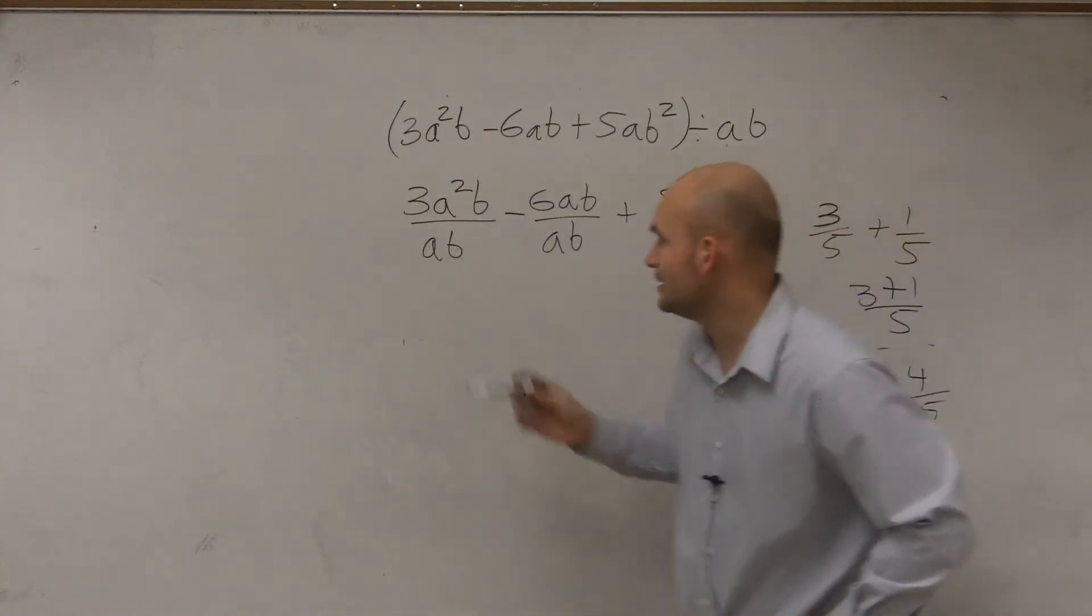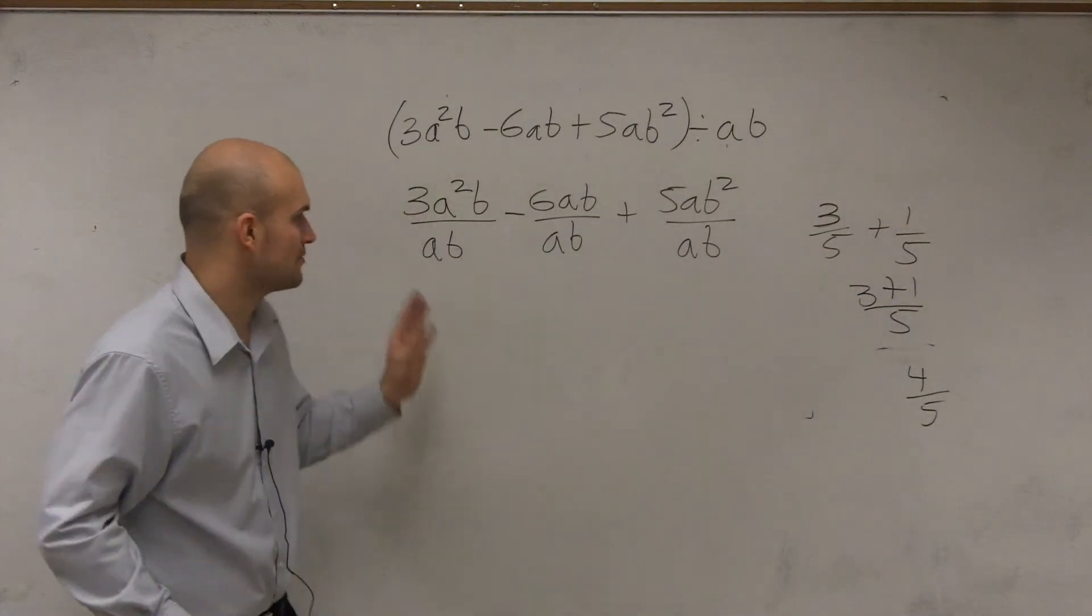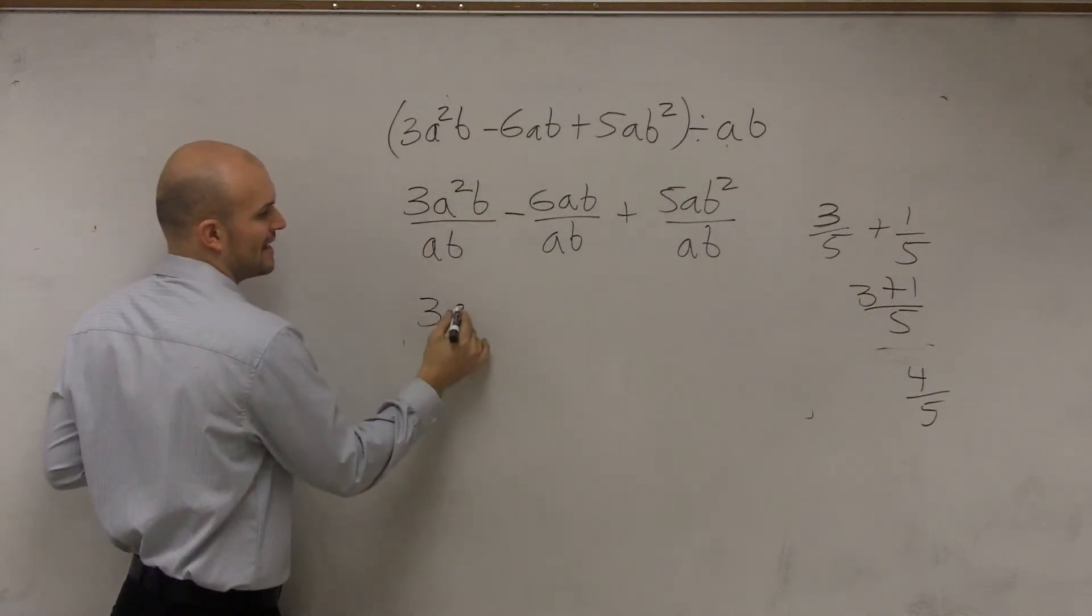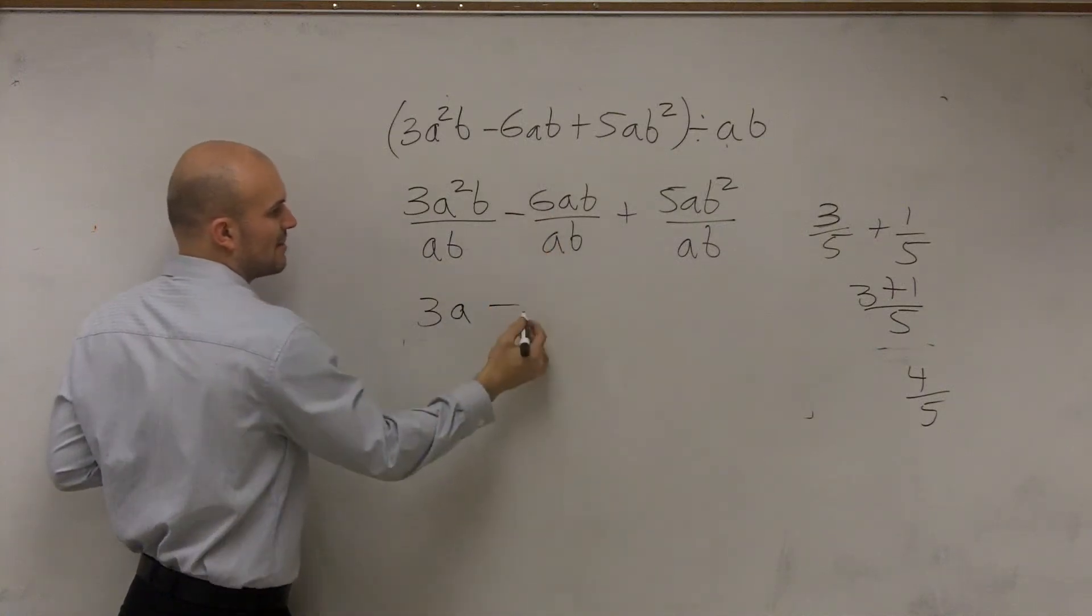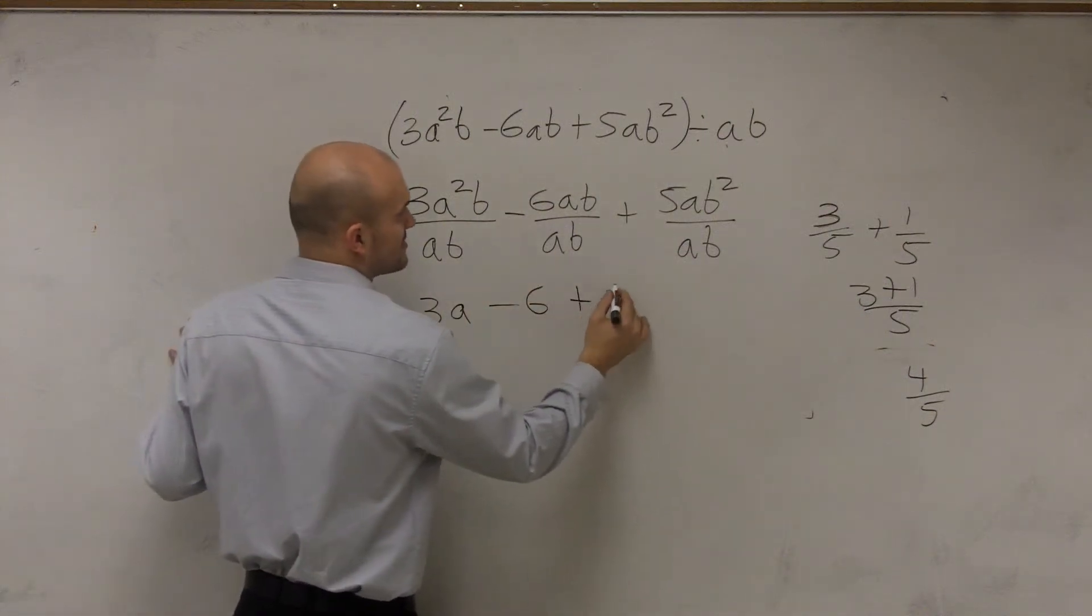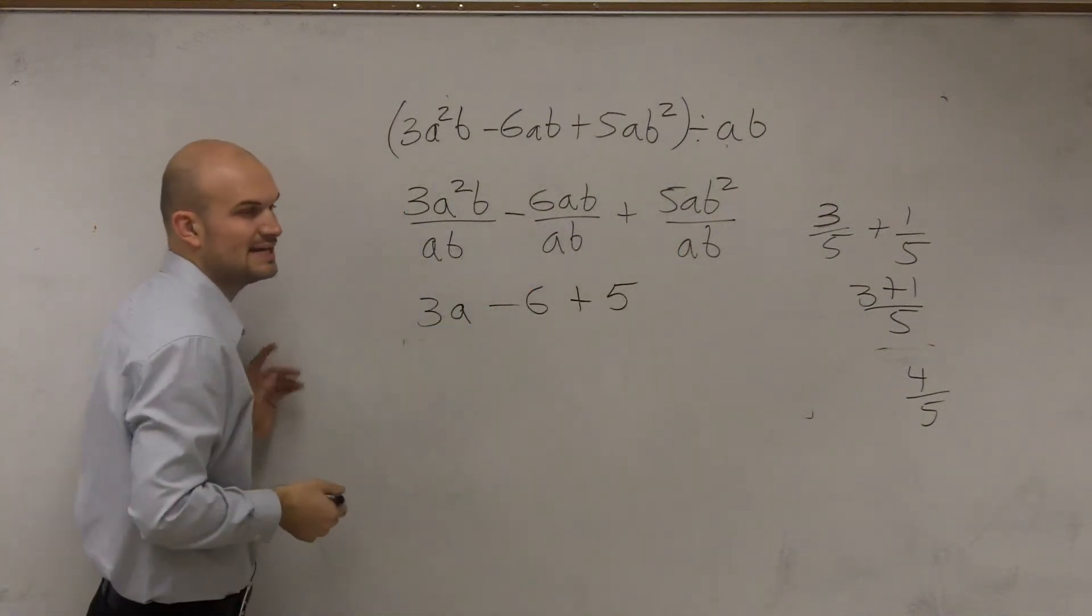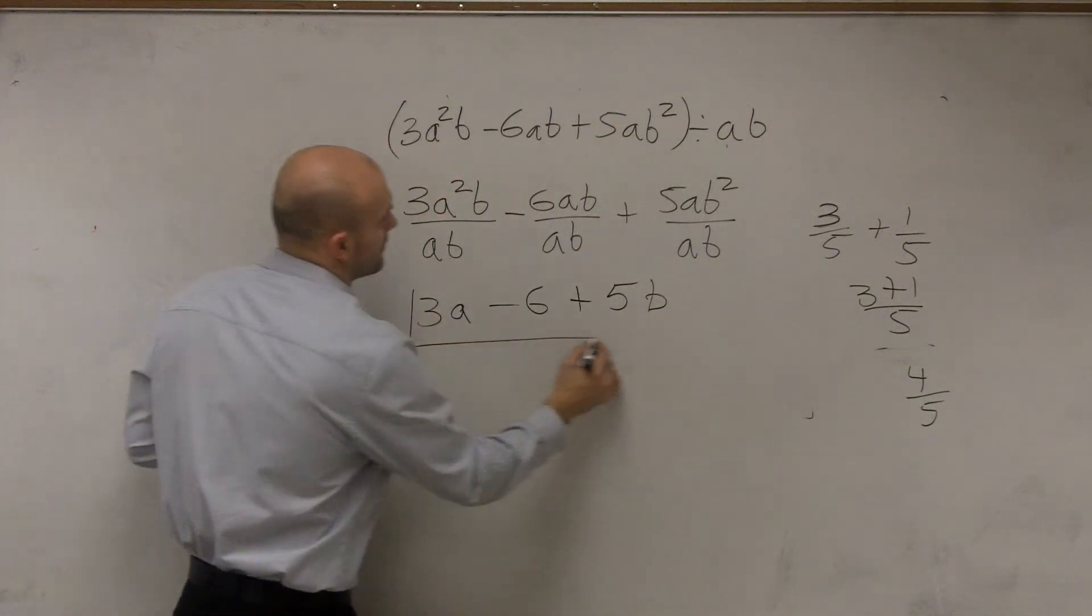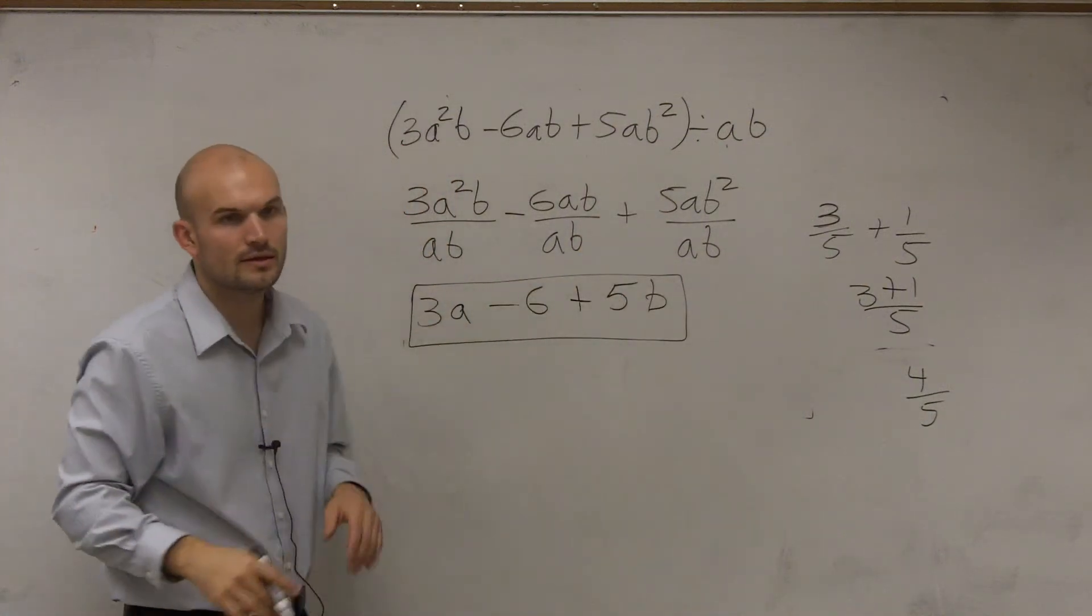3a squared divided by A. Well, that's a 3 divided by 1, so we're going to be left with 3. a squared divided by A is A. B divided by B is just 1, minus 6 divided by 1 is 6. A divided by A is 1. B divided by B is 1, so we'll just leave it as negative 6, plus 5a divided by A is 1. B squared divided by B is B. There you go.